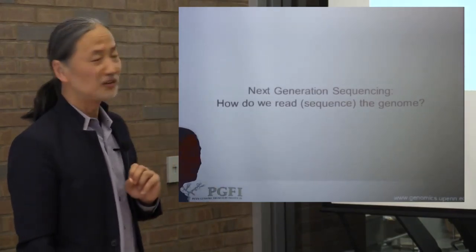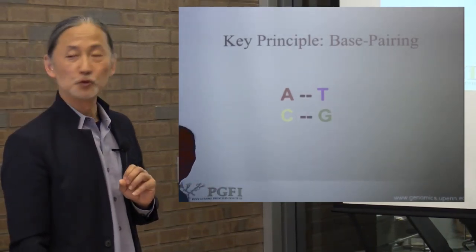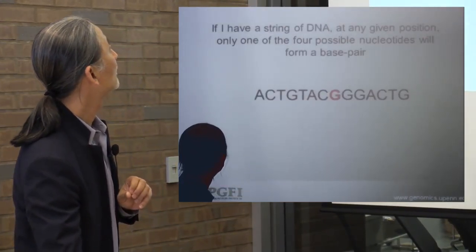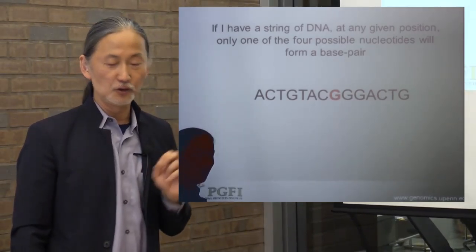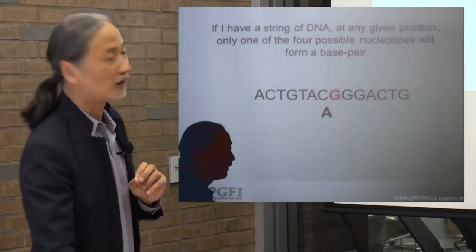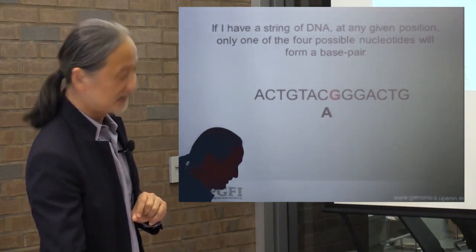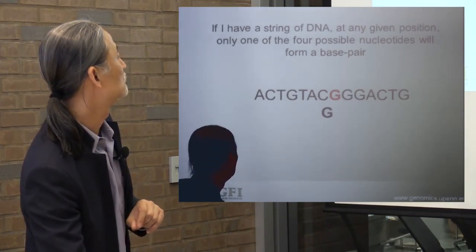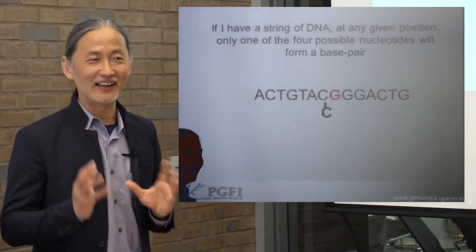How do sequencing reactions actually happen? The main key is the base pairing rules — A-T base pairing and C-G base pairing. If you have a string of DNA and you try to attach an A to a G position, it won't attach; it will fall off. Only the complementary base forms a bond — so only C will bond to G.